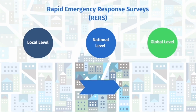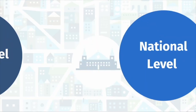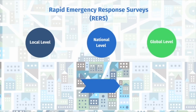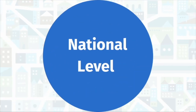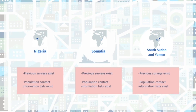The rapid emergency response surveys were implemented at the local, national, and global level. Each of these levels of surveying requires different types of sampling strategies. We will focus only on the national level in this video. The rapid emergency response surveys conducted phone surveying in Nigeria, Somalia, South Sudan, and Yemen. These countries presented different challenges, so developing a sample required different techniques in each country.